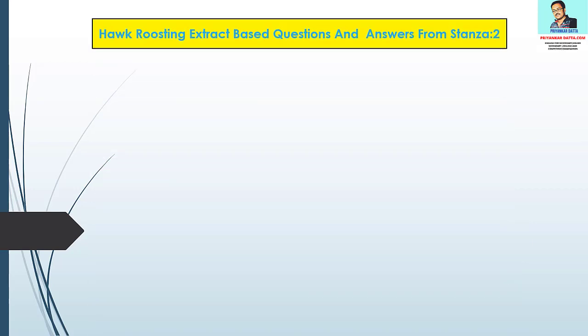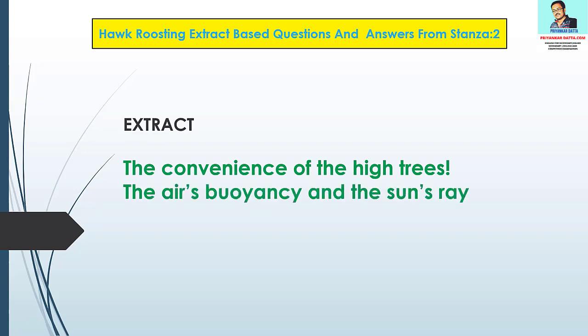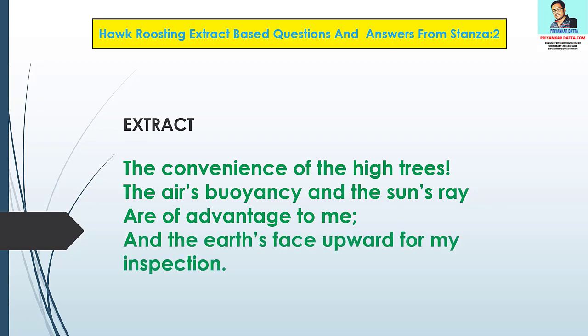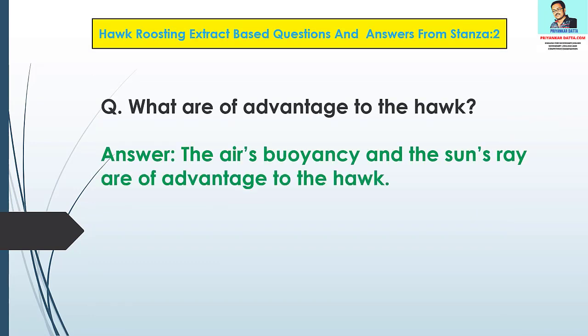Hawk Roosting extract based questions and answers from Stanza 2. Extract number one: 'The convenience of the high trees, the air's buoyancy and the sun's ray are of advantage to me, and the earth's face upward for my inspection.' Question 1: What are of advantage to the hawk? Answer: The air's buoyancy and the sun's ray are of advantage to the hawk.